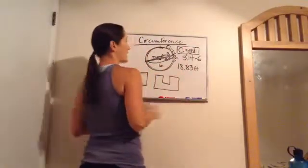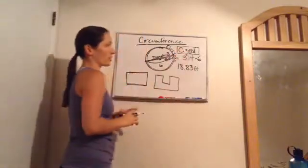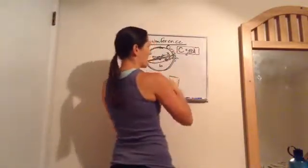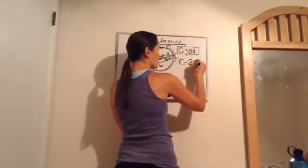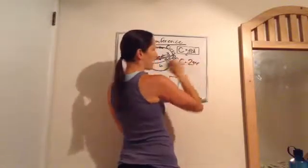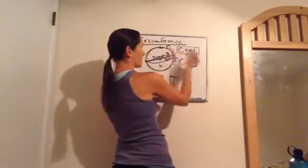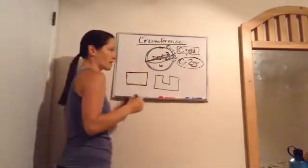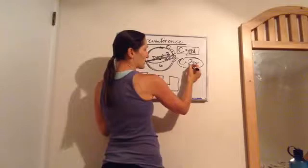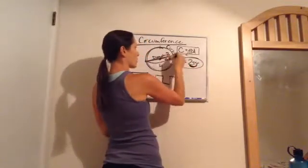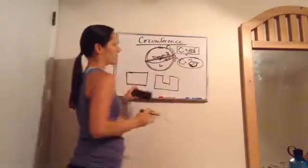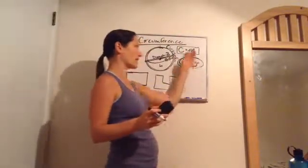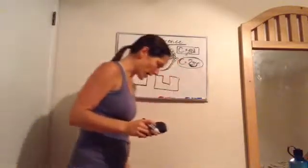Another formula for circumference is C = 2πr. That basically just means two radii: if the radius is 3, then 3 times 2 makes 6 — the diameter — which is the same thing. So C = 2 times pi times r is equivalent to C = πd. It's good to know both because you'll use them in different scenarios depending on whether you're given the radius or the diameter.